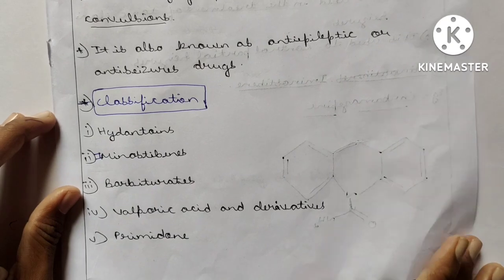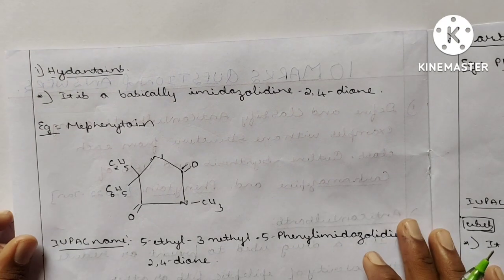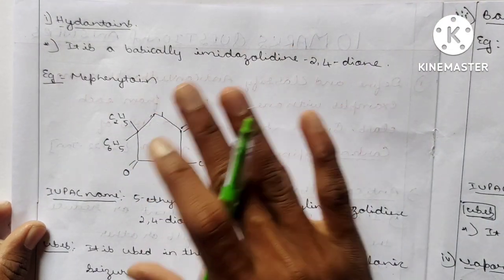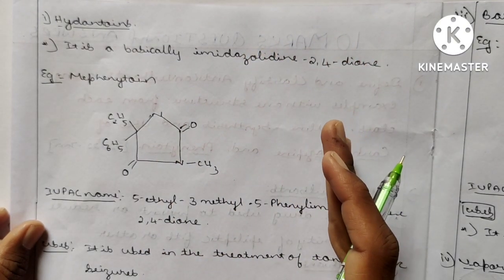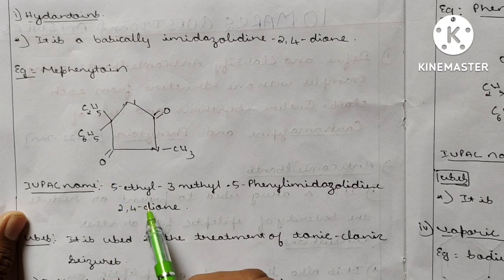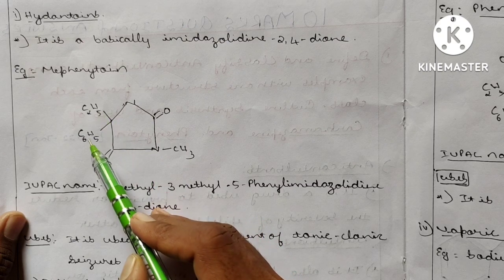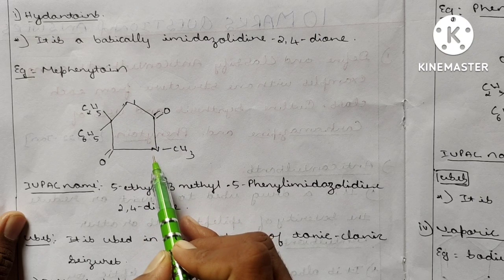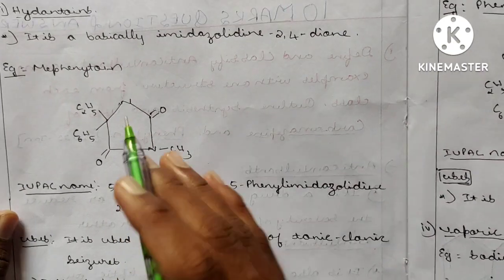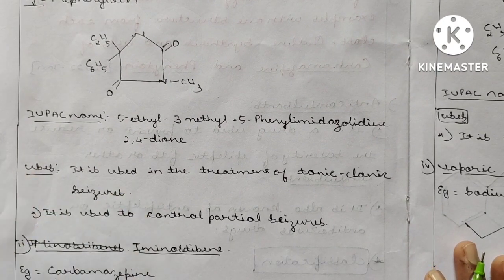Let's start with the first one, hydantoins. It is basically imidazolidine-2,4-dione. Example here is mefentoin. This is the structure of the mefentoin. You have to practice these, all are heterocyclic compounds. IUPAC name: 5-ethyl-3-methyl-5-phenyl-imidazolidine. Uses: it is used in the treatment of tonic-clonic seizures, used to control the partial seizures.